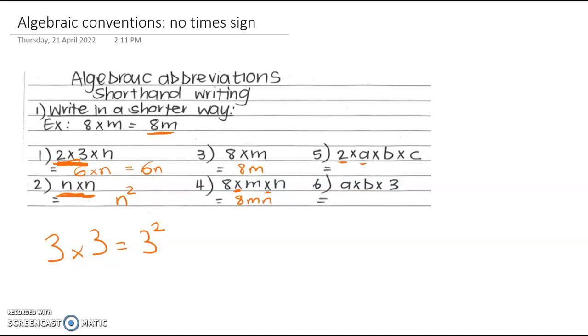In this next one, we've got 2 times a times b times c. So this is going to be 2abc. Right, let's look at this last one. We've got a times b times 3. So first, I'm going to write this one wrong. If we take out the times signs, we get ab3. But remember, I said we never want to write the number at the end. So we don't write that. We write equals 3ab. And we call this number here, the coefficient. I'll talk about that more later, either in this video or the next one. So that's my first big algebraic convention, no times sign.